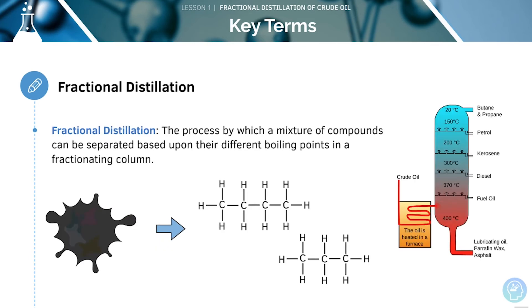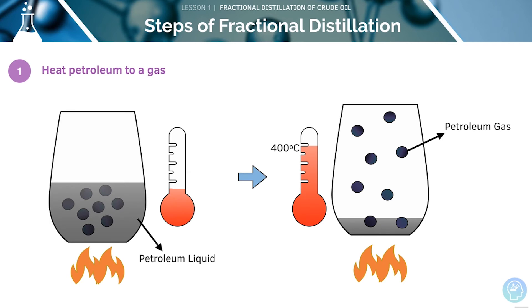Fractional distillation is the process by which a mixture of compounds can be separated. It's based upon their different boiling points in the fractionating column. Let's go through the process step by step.